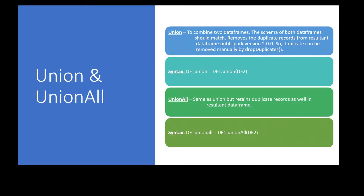Let us understand the functionality and syntax first. Union and union all — both of these functions basically combine two or more data frames. It would combine all the records from two data frames. The only difference between union and union all is that union would remove all the duplicate records from the resultant data frame, but union all would retain all the records from the data frame.